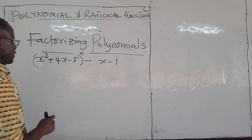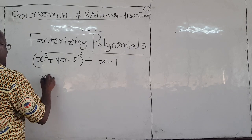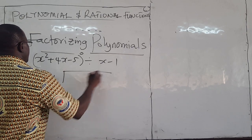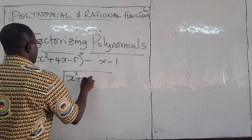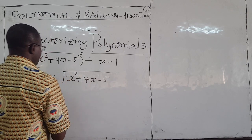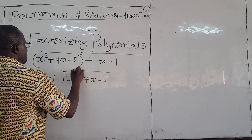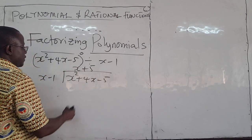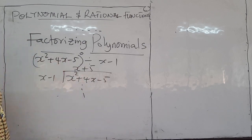We used long division and said that if you take x minus 1 and divide it into x squared plus 4x minus 5, the final result was x plus 5. I'm going through all that.